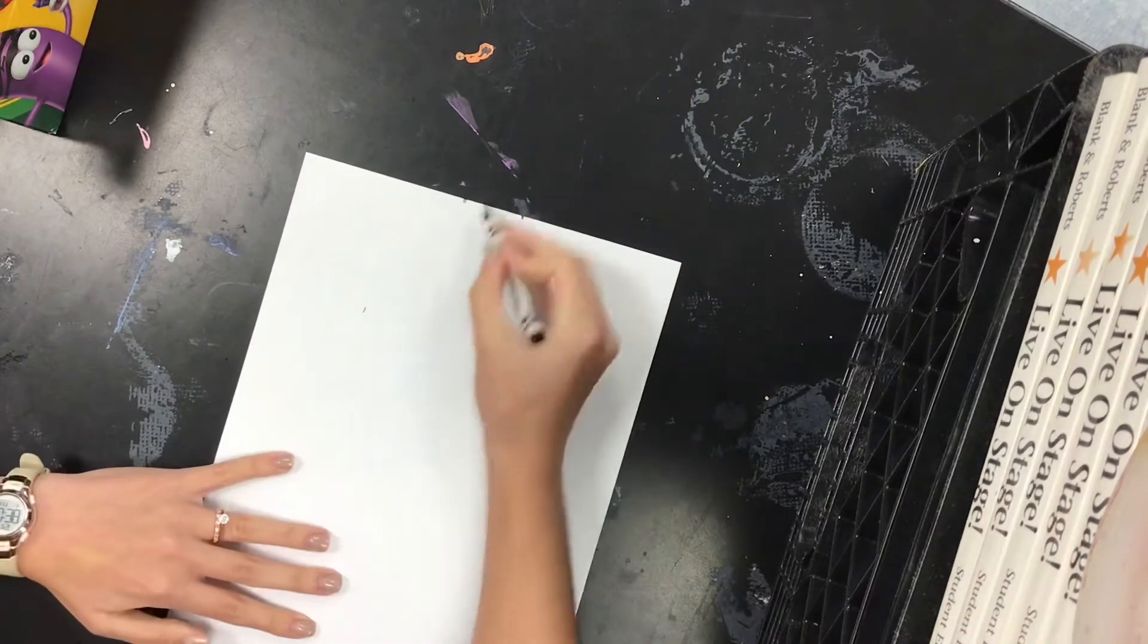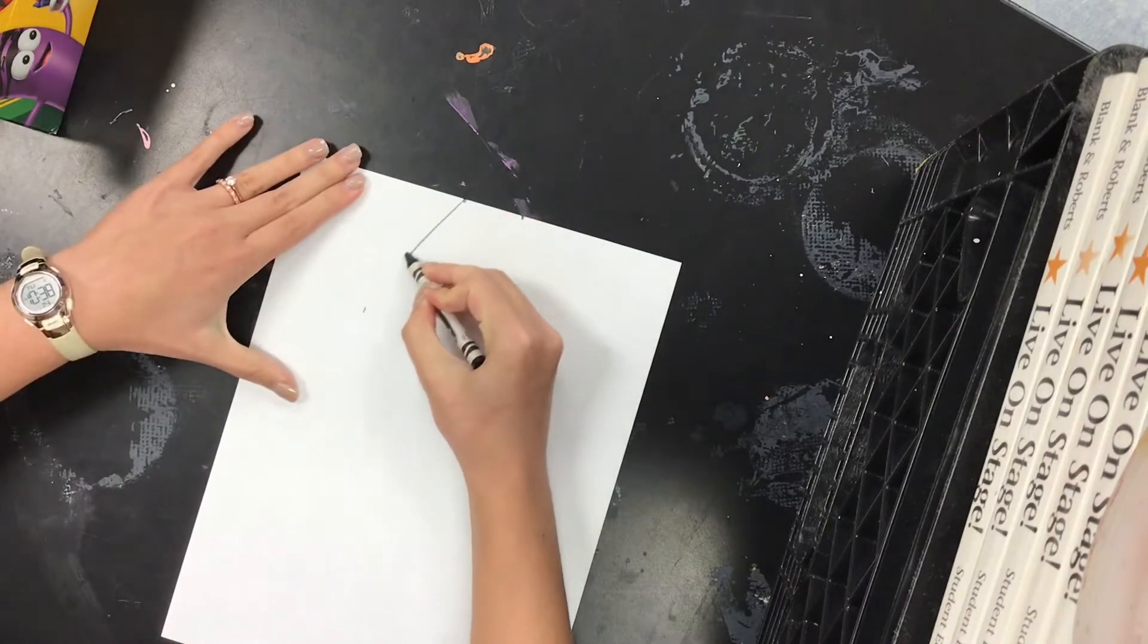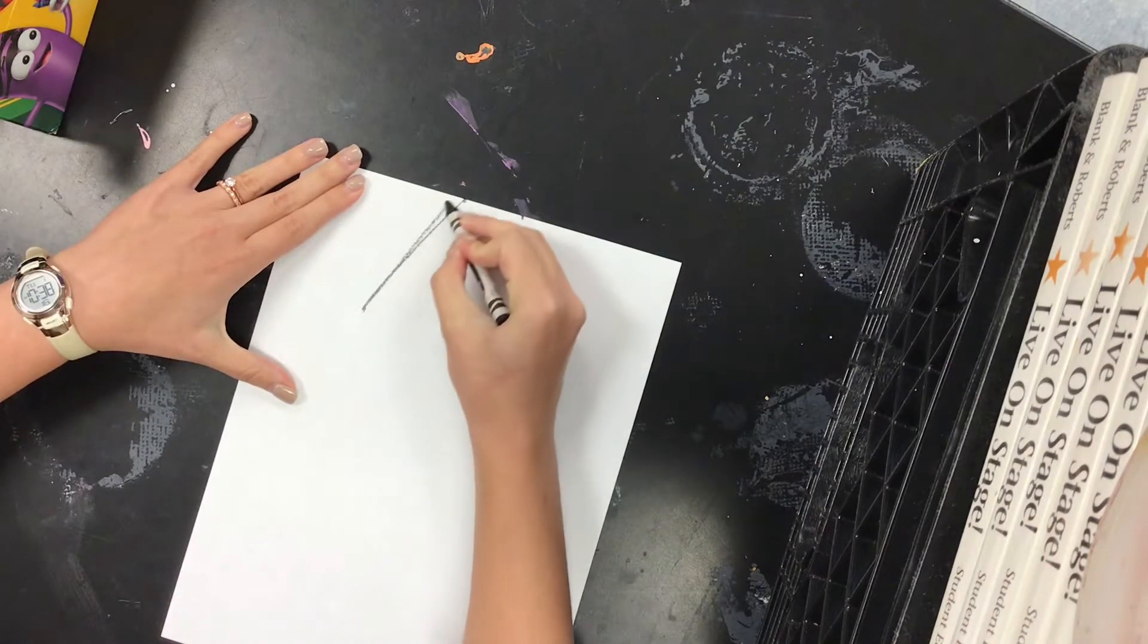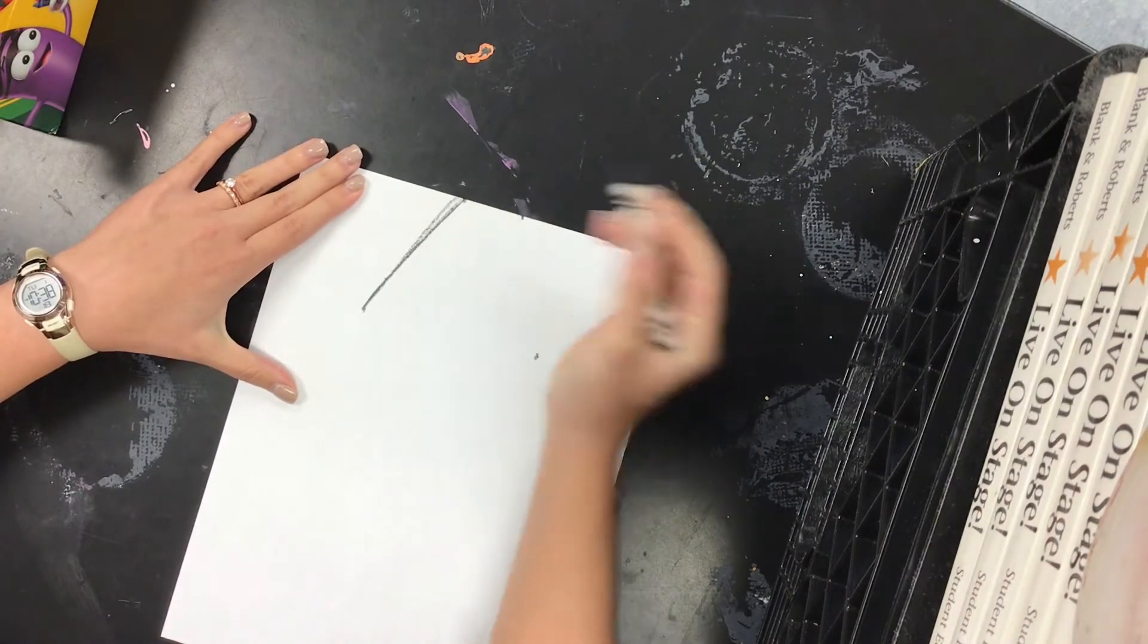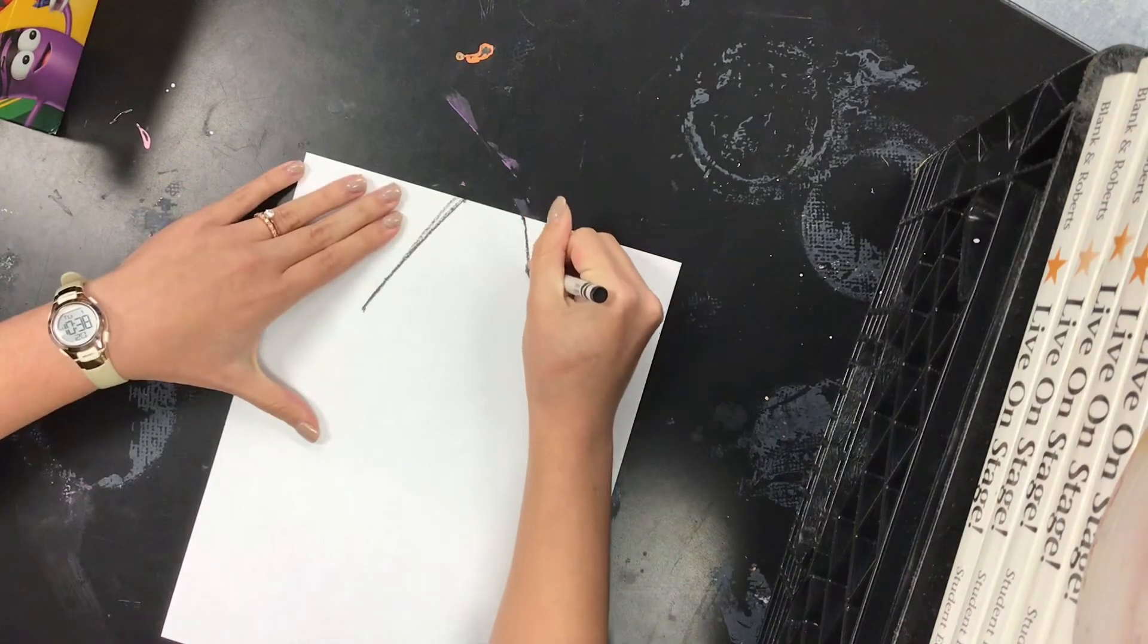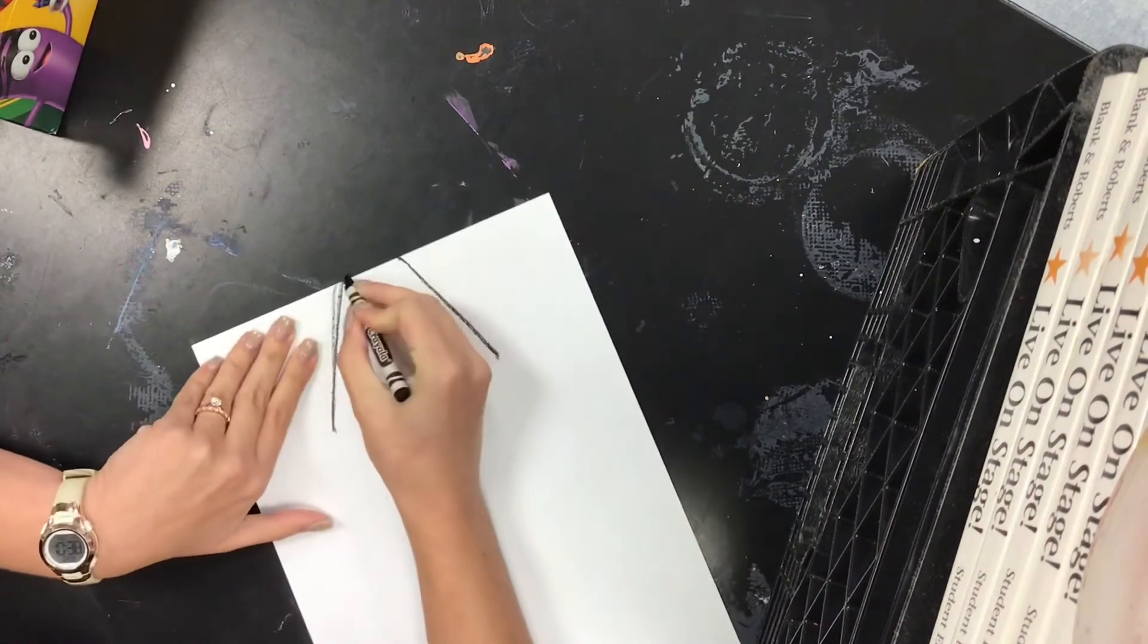Make sure you line your hand up everywhere. Connect those dots, and we're going to make the top of our crayon this way.